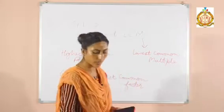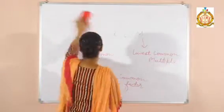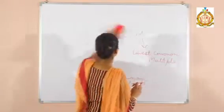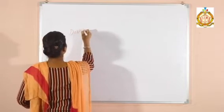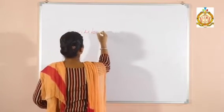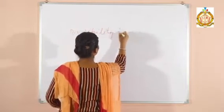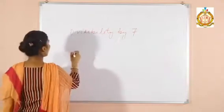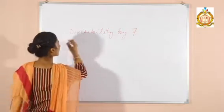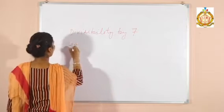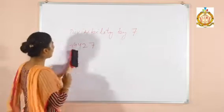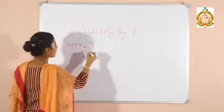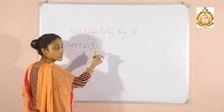So let's start Divisibility by 7. The first topic is Divisibility by 7. I will take a statement to check Divisibility by 7: 49427. What is the working rule to find Divisibility by 7? First of all, check the units digit. Here, the units digit is 7.